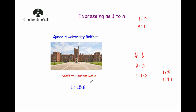When deciding which university to go to, I wanted a good ratio — meaning 1 to a low number. I didn't want something like 1 to 40, because I'd have felt that was too many students per staff member to get personalised help. So the staff-to-student ratio at Queen's, combined with it being a great university, meant I could get the support I needed from staff while studying.